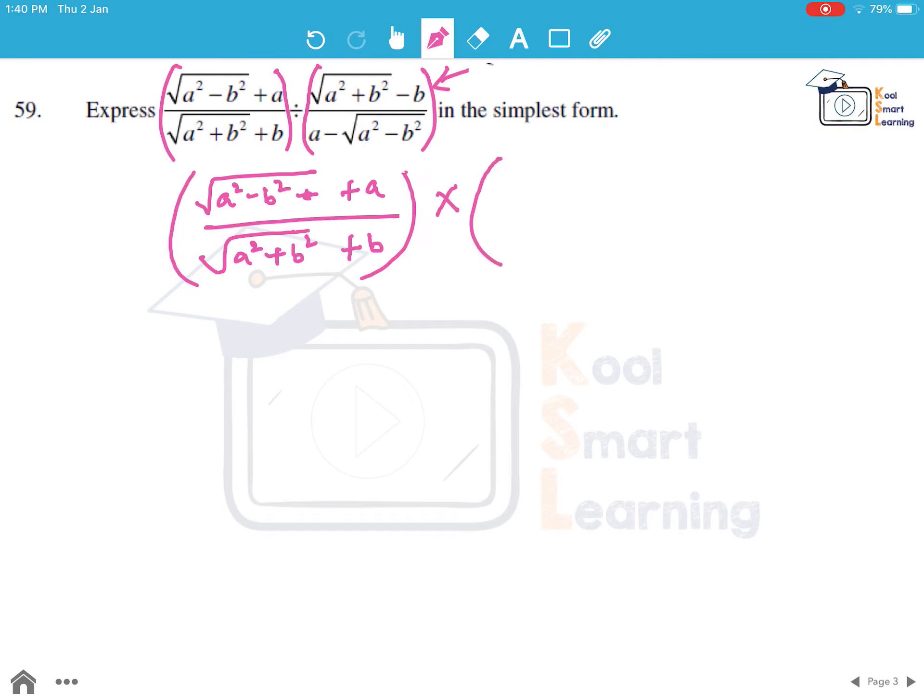So this becomes A minus the square root of A squared minus B squared, divided by square root of A squared plus B squared minus B. Now we use the identity X minus Y into X plus Y is equal to X squared minus Y squared. So in the numerator, it becomes A squared minus A squared minus B squared.